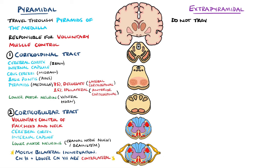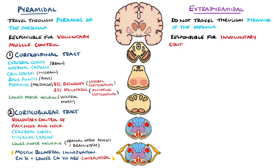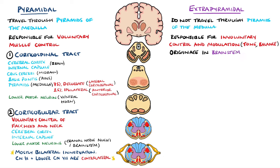Now let's look at the extrapyramidal tracts. They are different to the pyramidal tracts in that they do not pass through the pyramids, and they are responsible for involuntary control and modulation of the muscles, meaning they are involved in things like muscle tone and balance. Another difference is that they originate in the brainstem rather than the cerebral cortex.